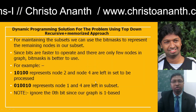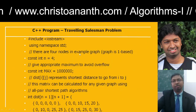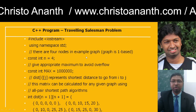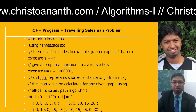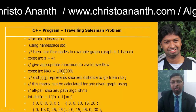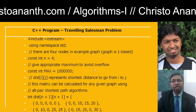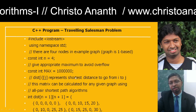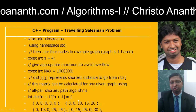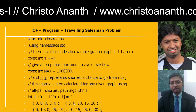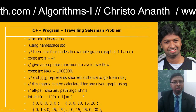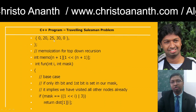Here is the C++ program for the Traveling Salesman Problem. We include iostream and use namespace std. We consider four nodes in the example graph, using 1-based indexing, so const int N = 4. To avoid overflow we set const int MAXM = 1000000. The distance matrix dist[i][j] represents the shortest distance from i to j, which can be computed using all-pairs shortest path algorithms. The distance matrix is initialized as: {0,0,0,0,0}, {0,0,10,15,20}, {0,10,0,25,5}, {0,15,25,0,30}, {0,20,25,30,0}.